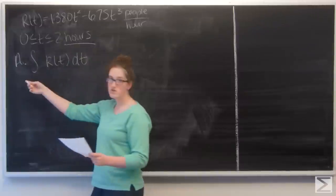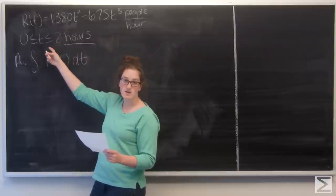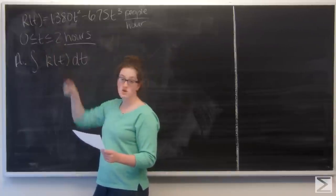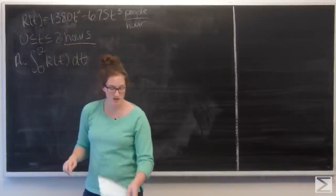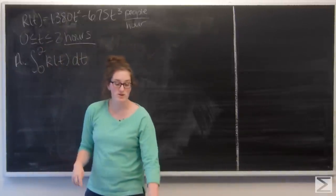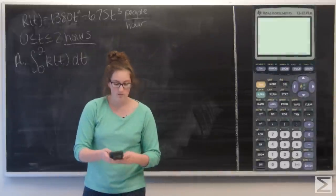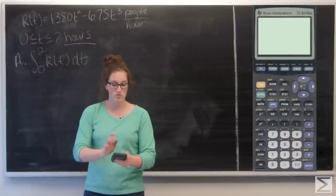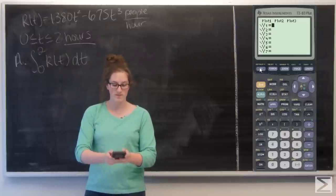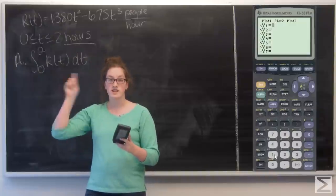I have the integral of r of t dt with bounds of integration from zero to two. Now you can calculate this integral by hand, but since this is a calculator question, I'm going to do it on my calculator. The first thing I want to do is plug r of t into the y equals menu. Go to the y equals button, make sure all your graphs are cleared, and type r of t into y1.